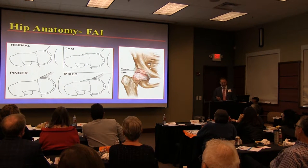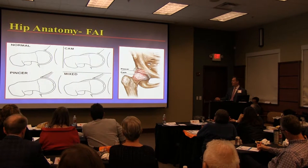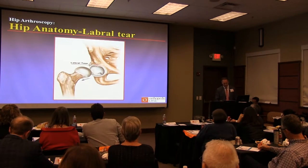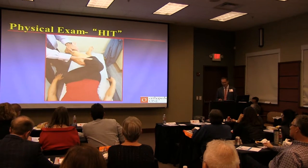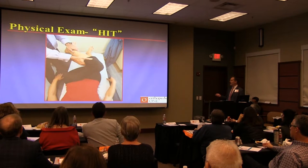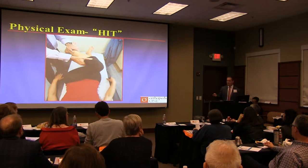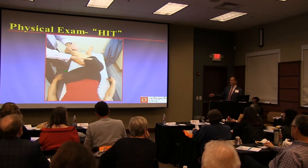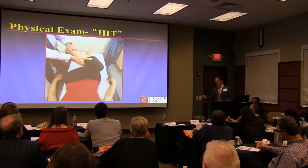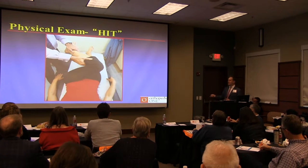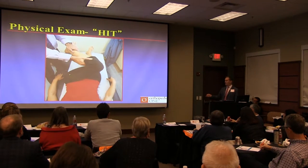Most commonly FAI is mixed — you get a combination of pincer and cam. The hip impingement test: hip flexion, adduction, then internal rotation. People with hip impingement and a labral tear will typically almost jump off the table. When you externally rotate and they have trochanteric problems, they'll have pain laterally. When you do the impingement maneuver, those people won't have pain — that helps differentiate trochanteric problems.